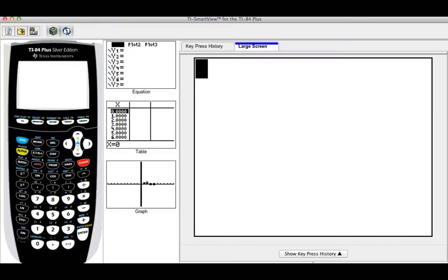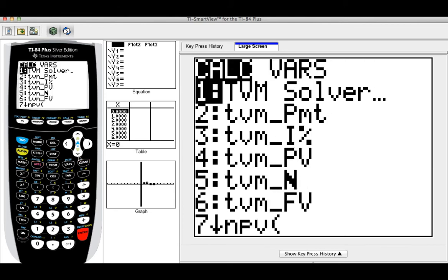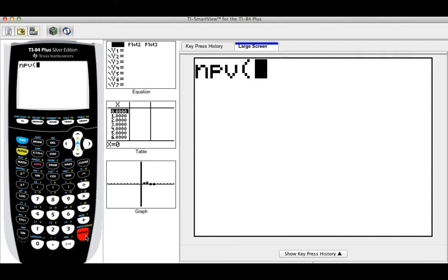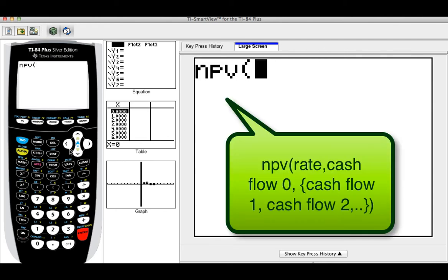Okay, so we are here in our calculator. I want you to go to apps and then click enter. And then we're going to go to the function NPV. Remember, we need to bring all of these cash flows to the present. So the first argument you need to put is the rate, which I'm going to put seven comma. The second argument you need to put in the calculator is the cash flow, the initial cash flow.